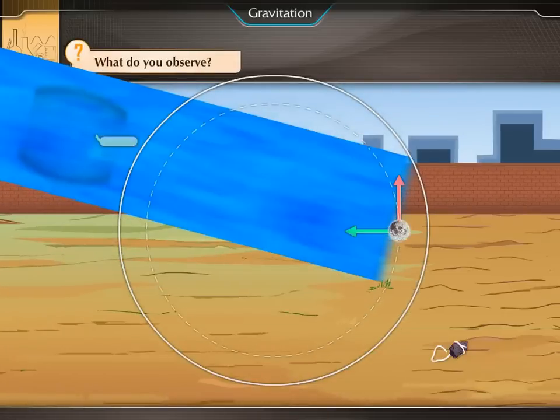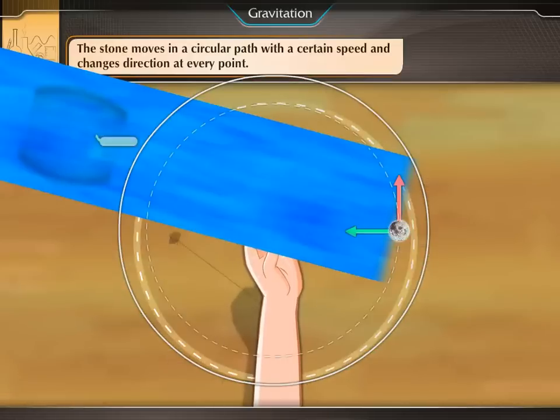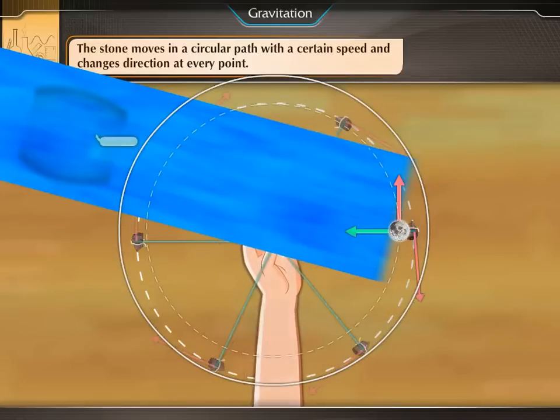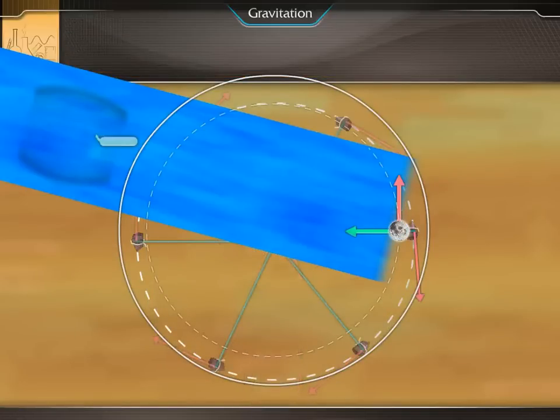What do you observe? The stone moves in a circular path with a certain speed and changes direction at every point. At every moment, it has a velocity along the tangent.